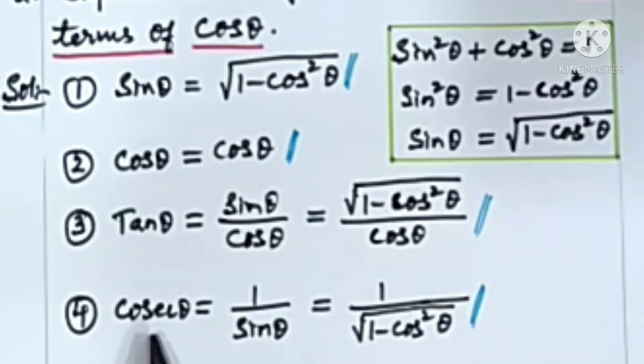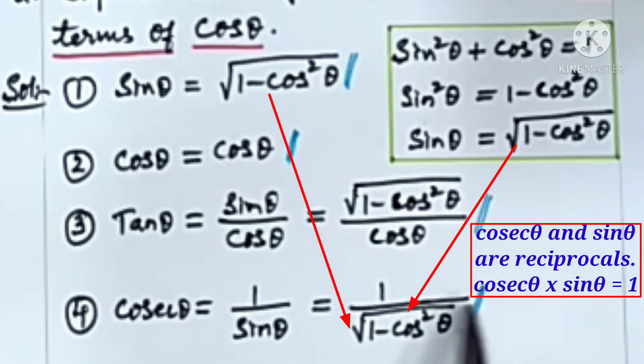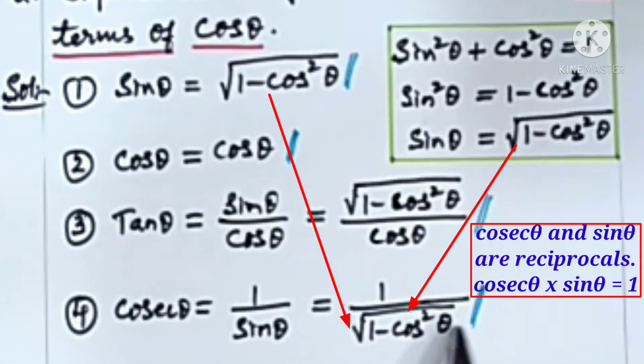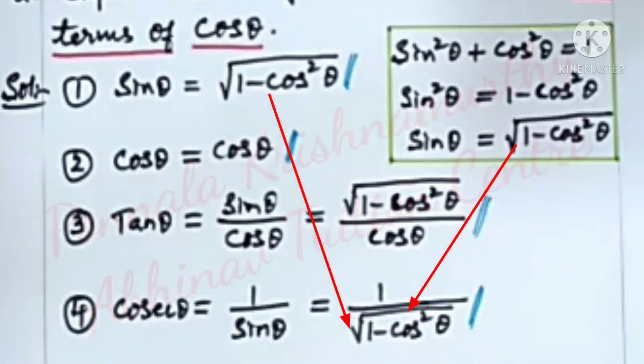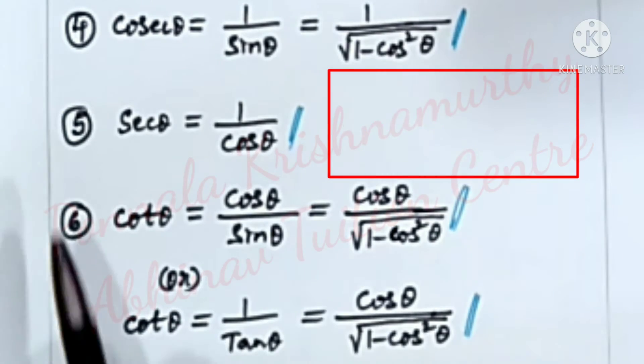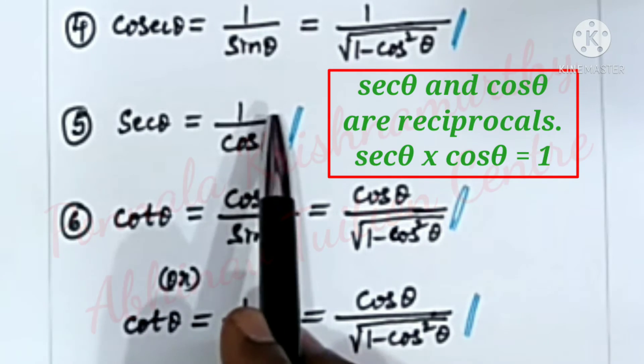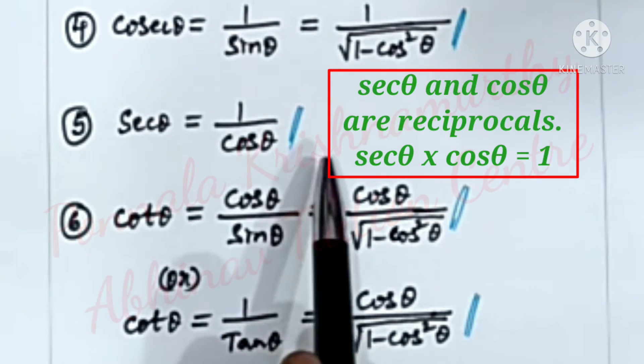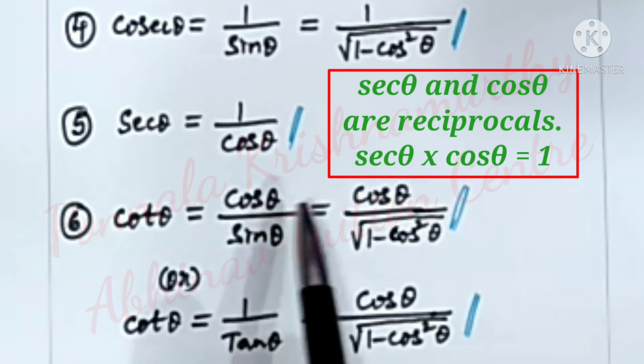Fourth one, cosec theta is equal to 1 by sin theta, that is equal to 1 by under root 1 minus cos square theta. Fifth one, secant theta is equal to 1 by cos theta, since secant theta and cos theta are reciprocals.